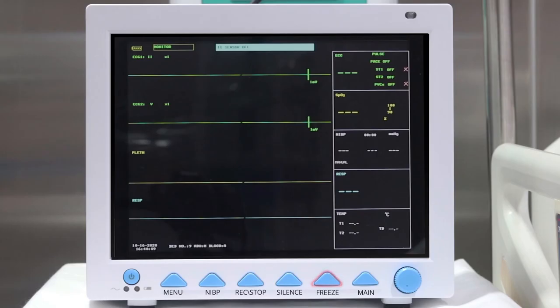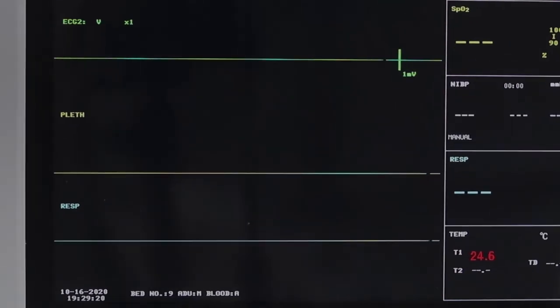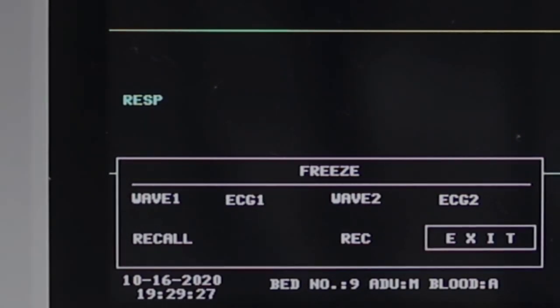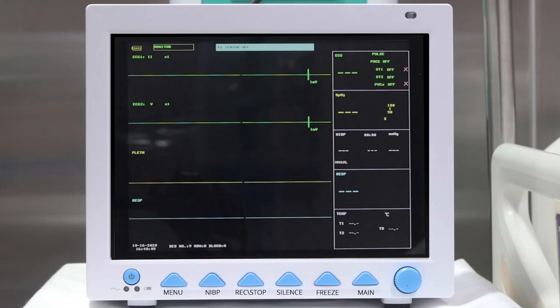Freeze: Press this button and the system will access the freeze status. In this status, the user may review the waveform of 34 seconds. Also, the frozen waveform can be printed out. In the freeze status, press this button again to discharge from the freeze status.